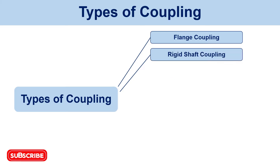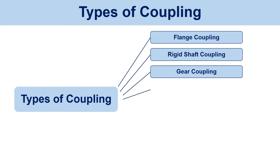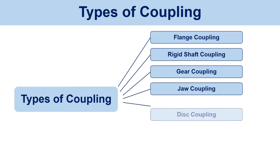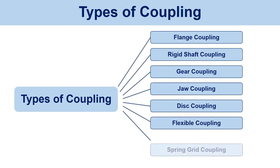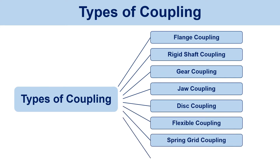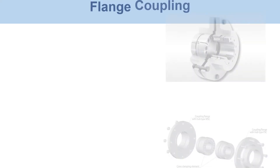Some important types of industrial couplings are given below. We will further discuss these types in detail in the later part of the video. Flange coupling.